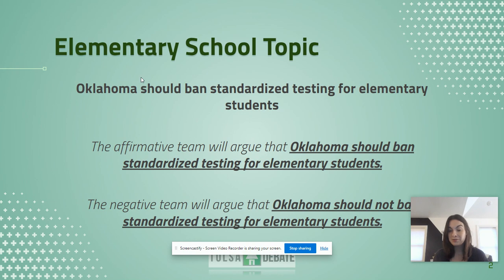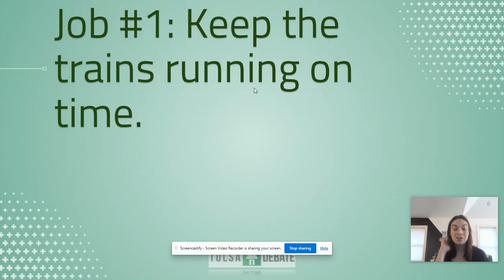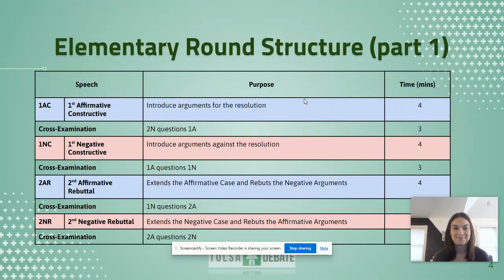There will be two students on the affirmative team and two students on the negative team. Job number one is to keep the trains running on time. Here is the schedule and the structure for an elementary round.